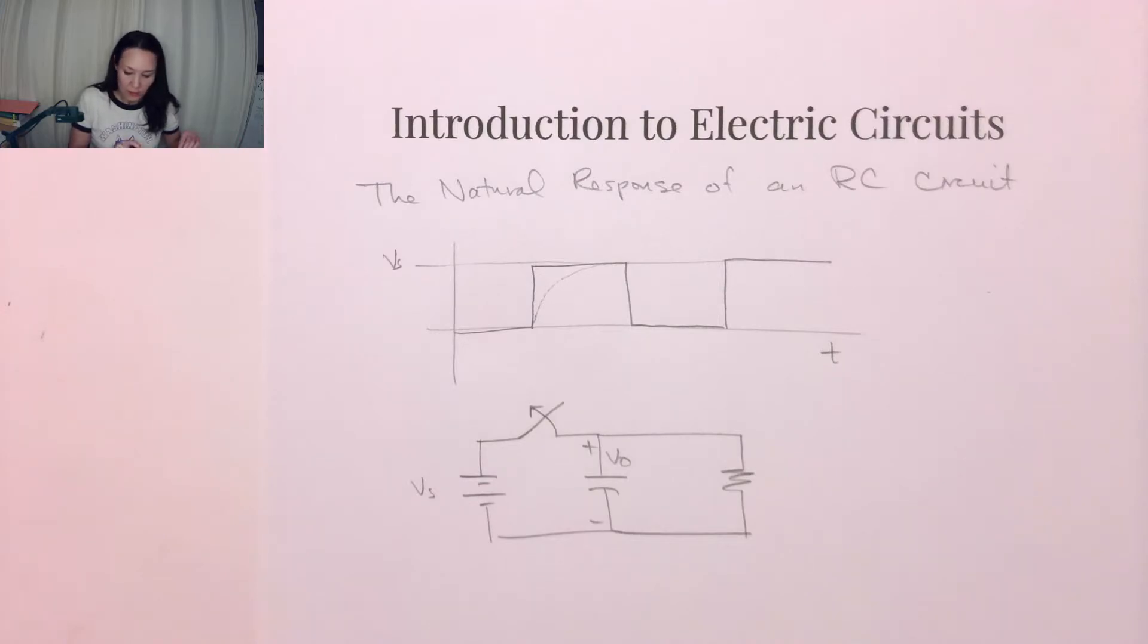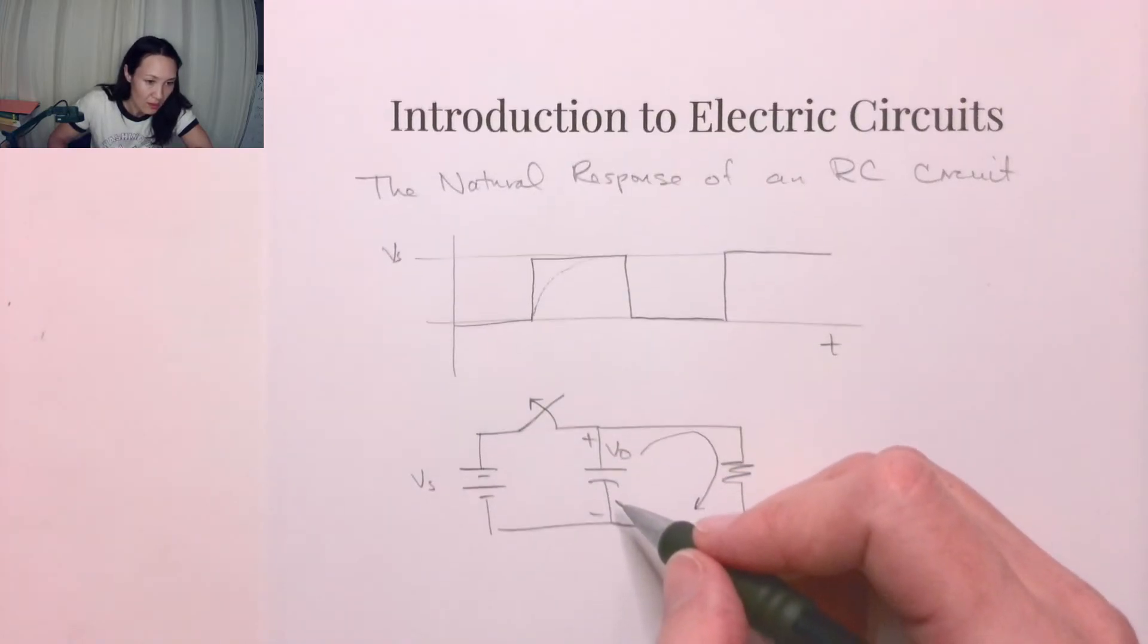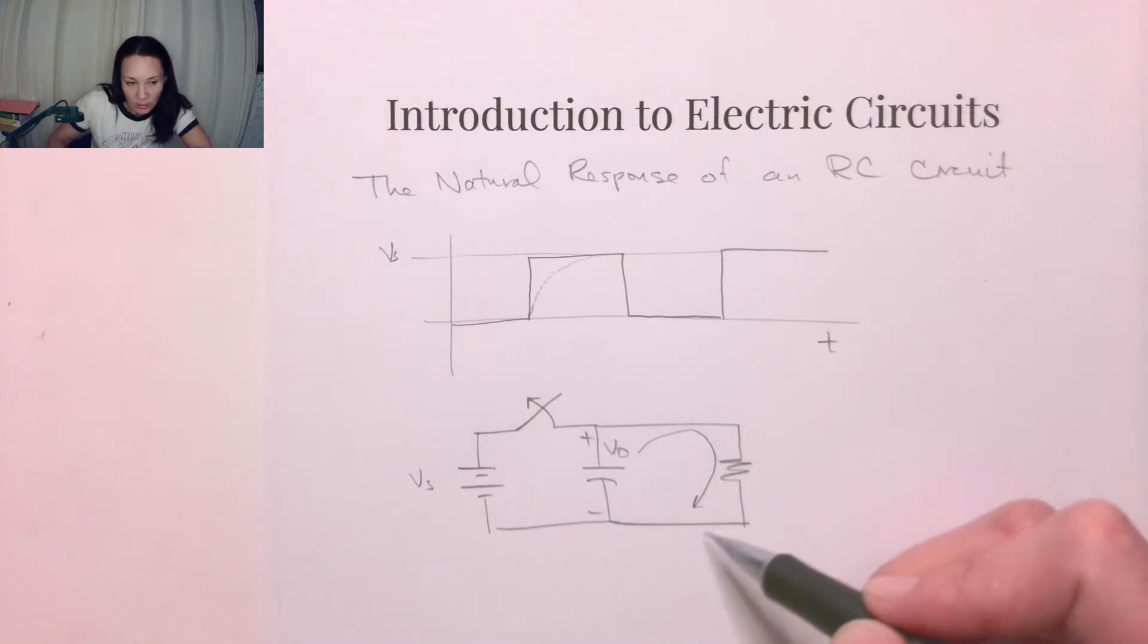If there's a voltage stored on this capacitor, acting like our battery, the current generated by this makeshift battery is going to discharge through this capacitor. We've got this circuit here.